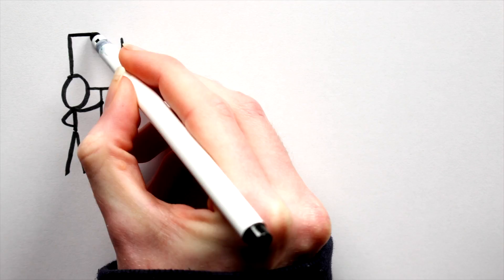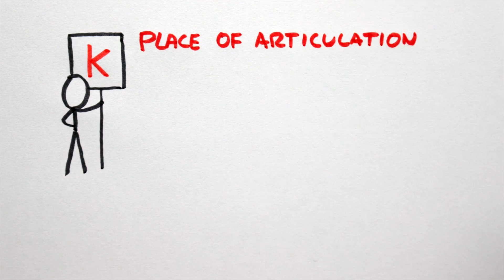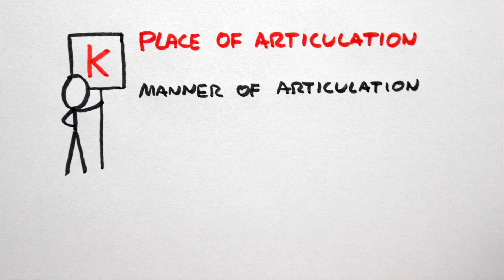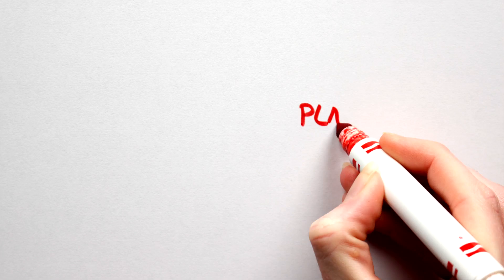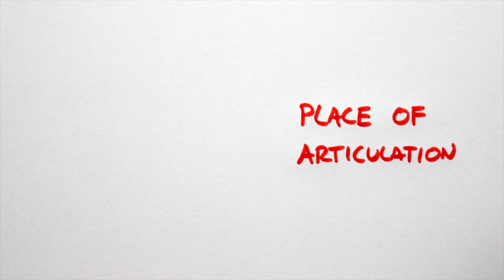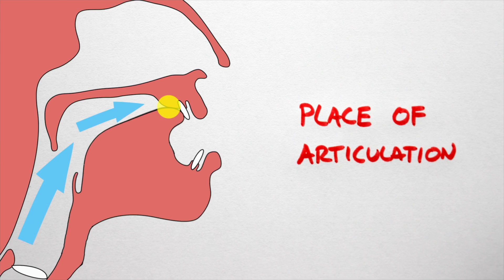There are three elements to any consonant: place of articulation, manner of articulation, and voicing. In this video, let's look at place of articulation. Place of articulation, or point of articulation, indicates where in the mouth the obstruction is occurring when a consonant is formed. Now, to create an obstruction, two bits of your mouth need to be brought together, the articulators.